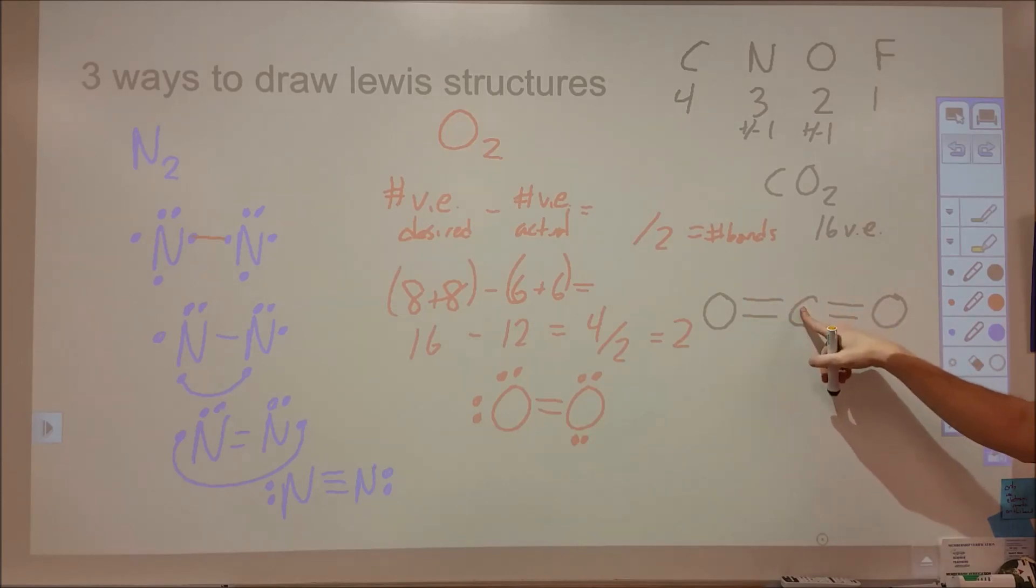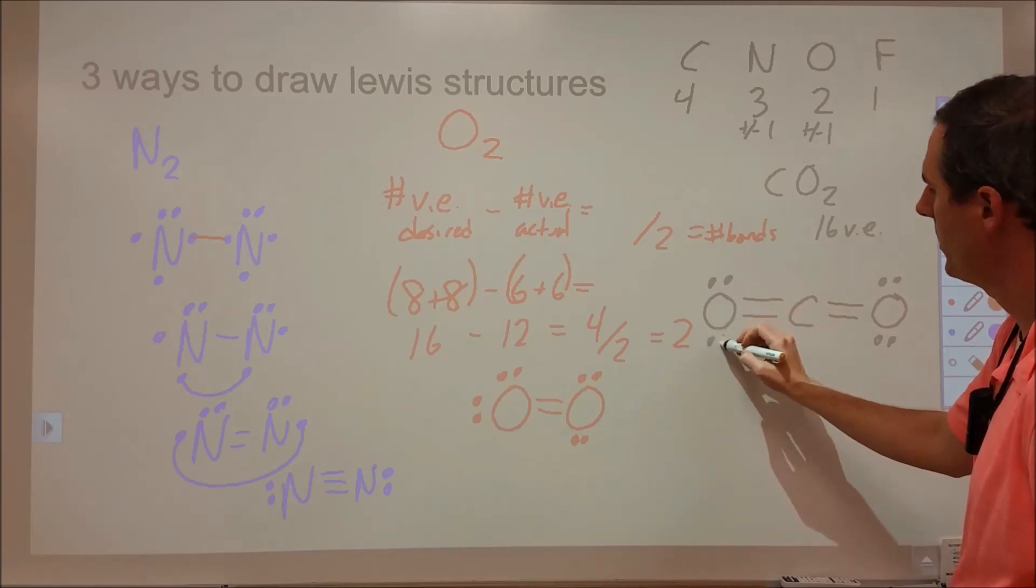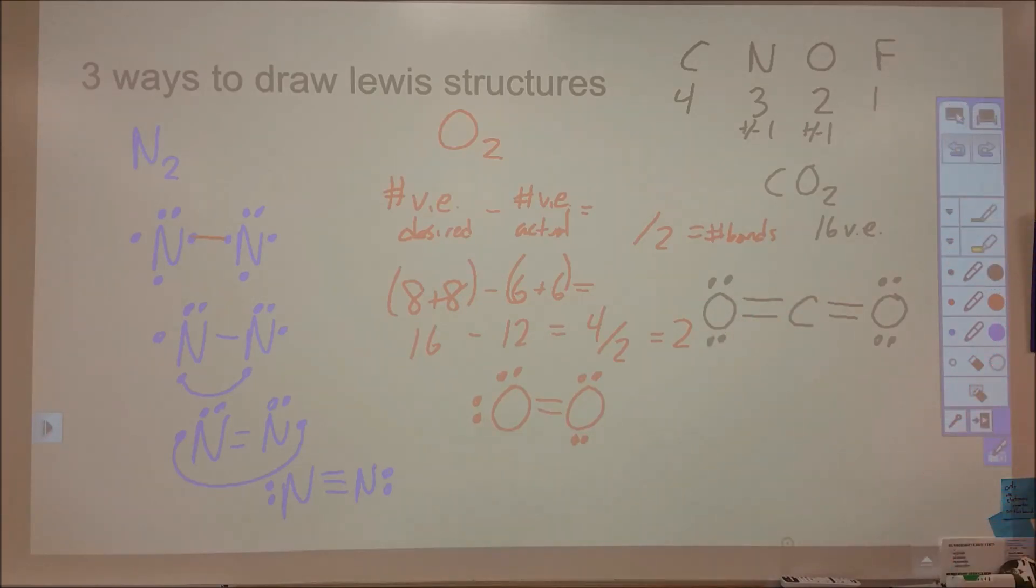That's now got its 8 electrons for the carbon, but we still have more electrons to work with. We've put down 8 of them. We need to put 8 more. So we could put 4 more on each oxygen like this, and that would then be our Lewis structure.